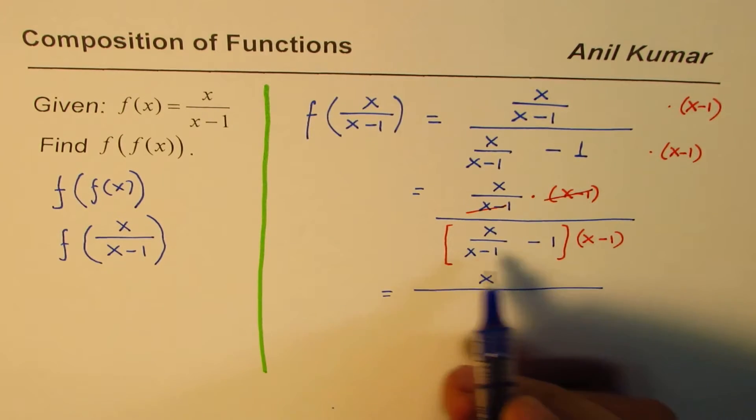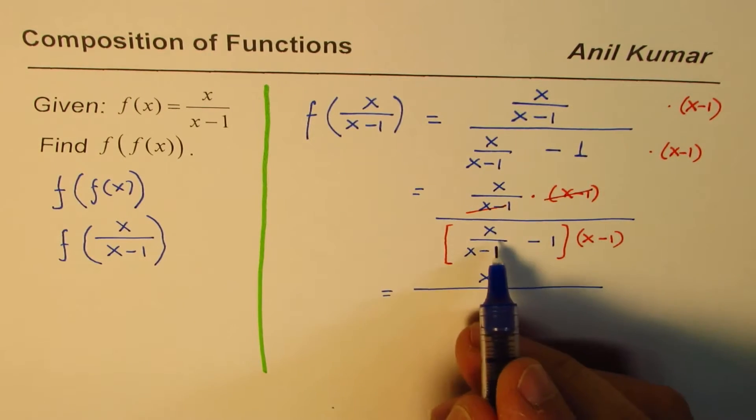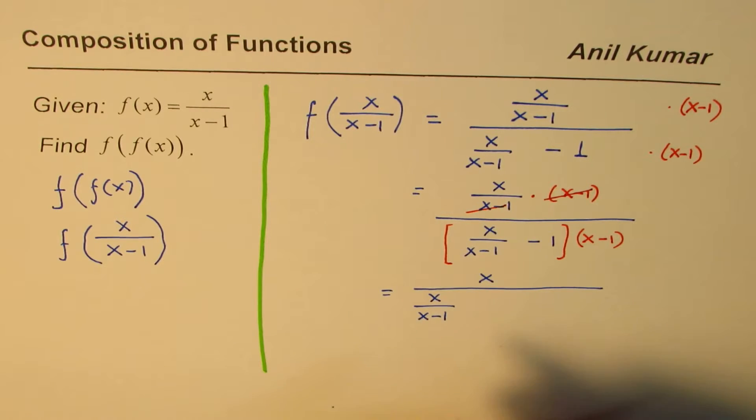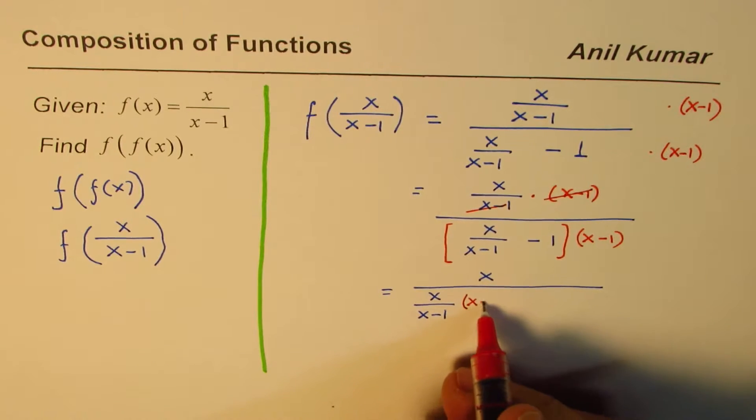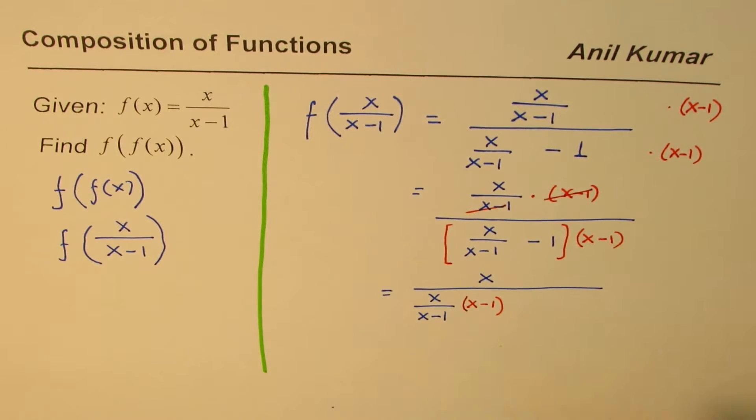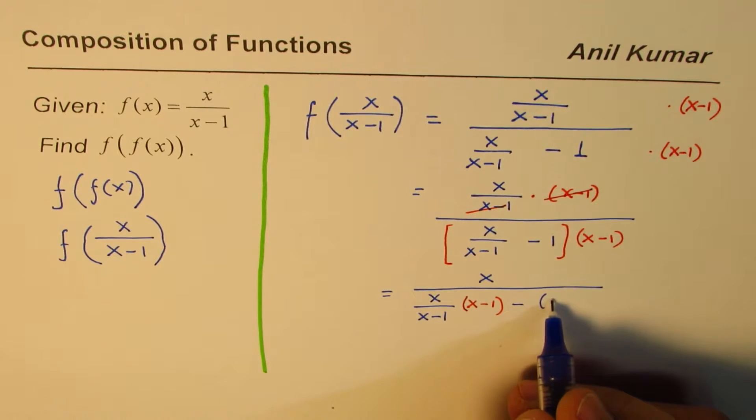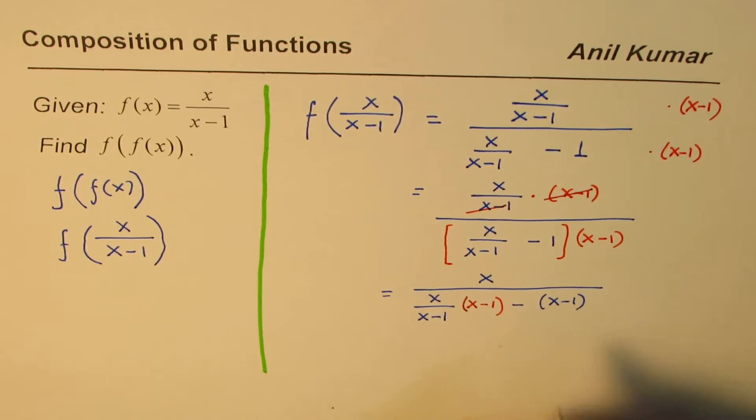Here, when you open the bracket, first you have to multiply this by the first term, which is x over x minus 1. So let me write this as times x minus 1. And then we have minus, so 1 times x minus 1.